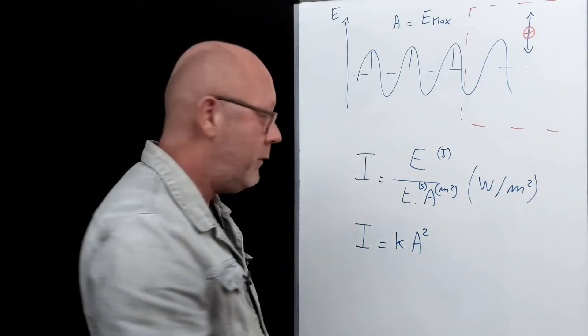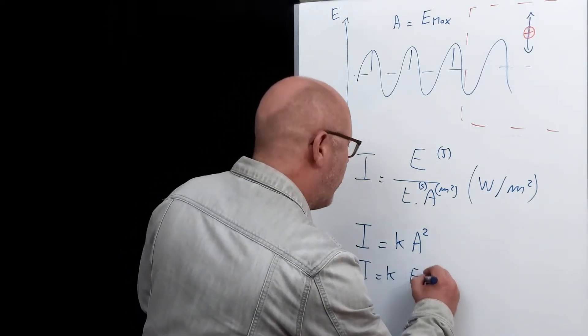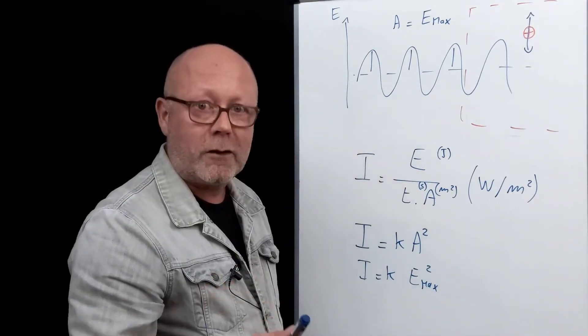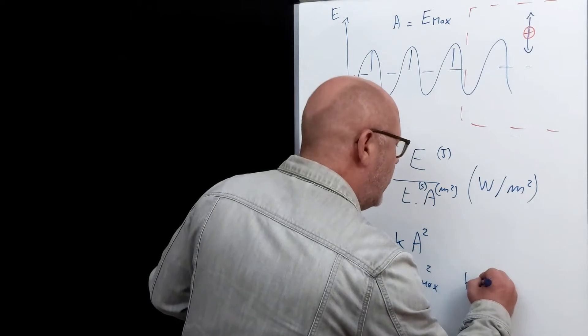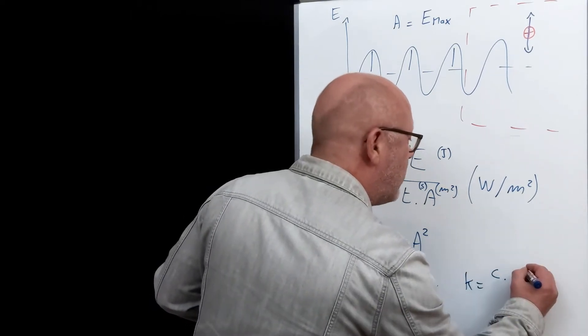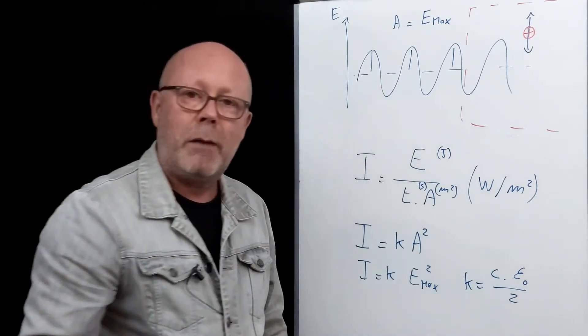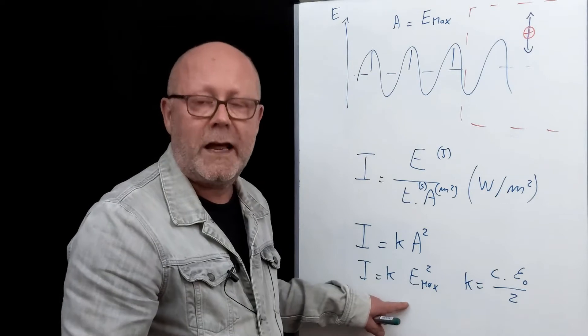So for an electromagnetic wave, the intensity will be proportional to the square of the maximum value of the electric field strength. For those that are curious, for an electromagnetic wave, k is equal to the speed of light multiplied by the permittivity of vacuum divided by 2. But for our video, we don't really care about this. We'll just consider the proportionality.